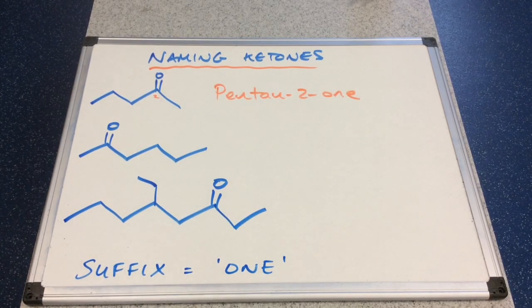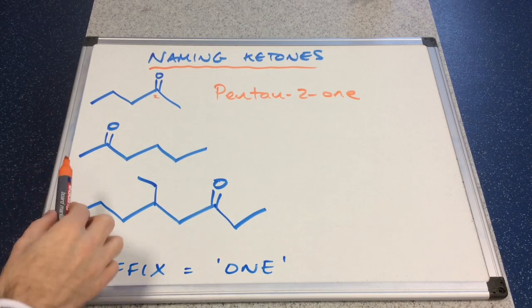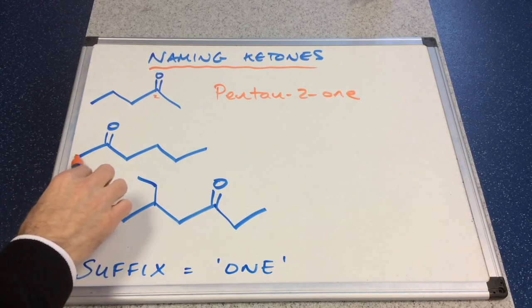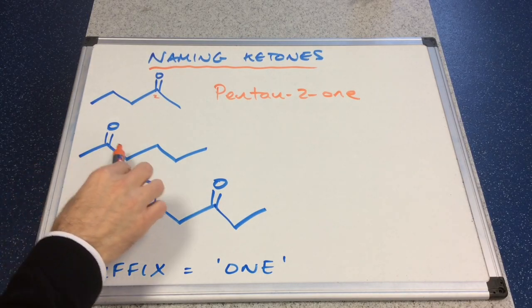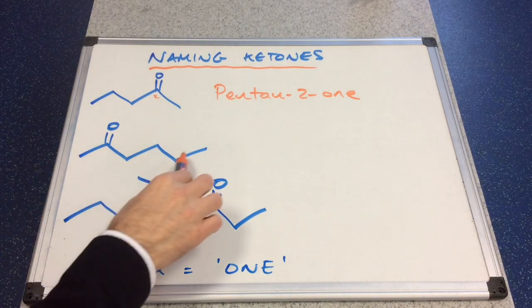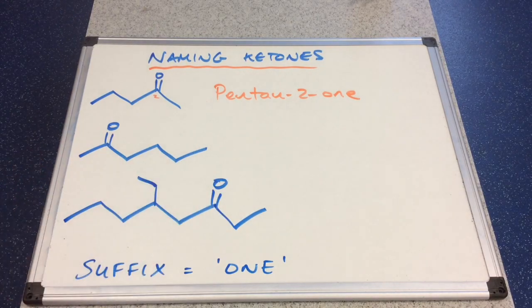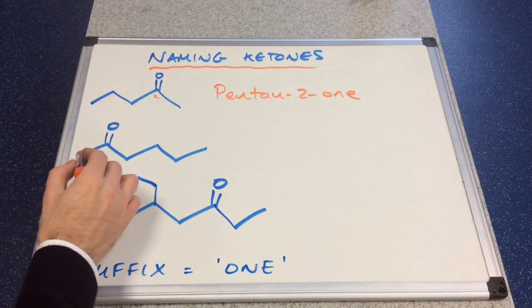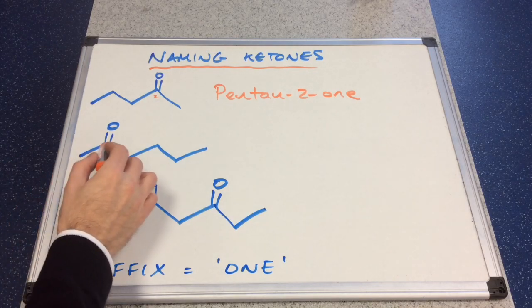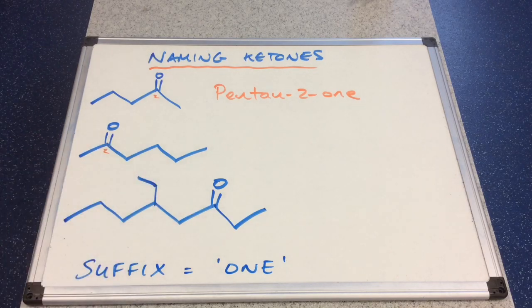The next one, we've got a continuous chain of six. So this will be based on 'hex'. And again, the C double bond O is at position two. So this will be called hexan-2-one.